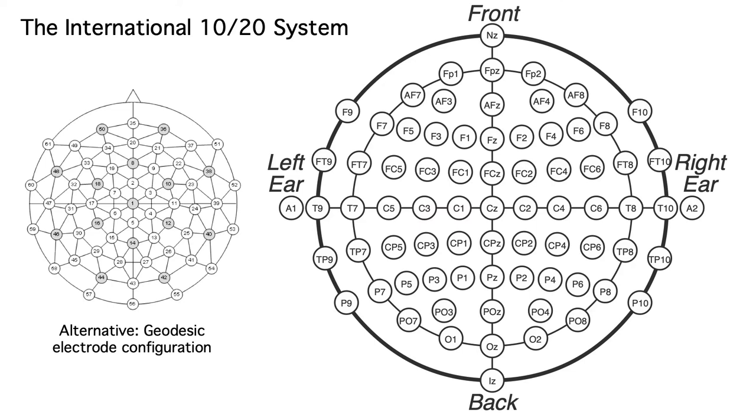Some EEG recording systems don't use the 10/20 system. Instead, they use a geodesic configuration that guarantees an equal spacing between each adjacent pair of electrodes. These layouts use idiosyncratic numbering systems, and a publication will typically say something like, these are data from electrode 27, which is near the P2 location in the International 10/20 system.